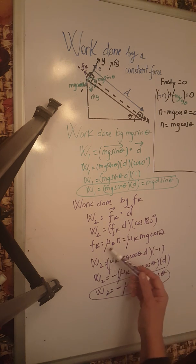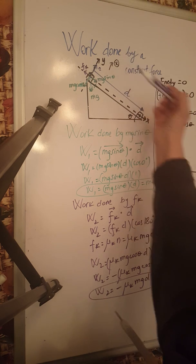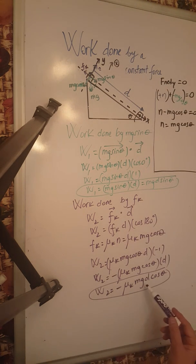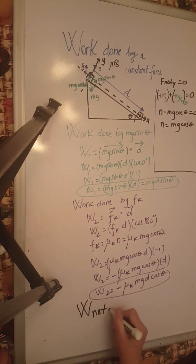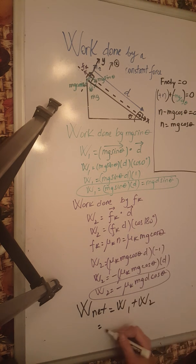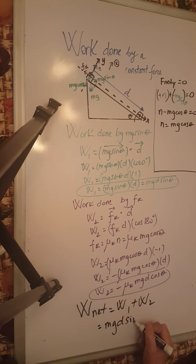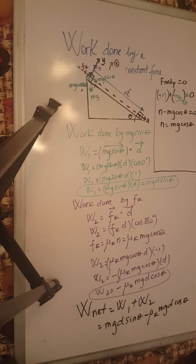The force of friction is mu k times n, and the normal force from the y-axis balance is mg cosine theta, giving the expression for W2. If we want the net work, we add the two: W net equals W1 plus W2, which is mgd sine theta plus negative mu k mgd cosine theta. That is the net work in this problem. Thank you.